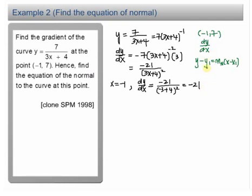Now we have to find the equation of normal. We already have (-1, 7), the x1, y1. Now we proceed to find the gradient for normal. Gradient for tangent at this point is actually your dy/dx, which is negative 21. And we know that gradient for normal equals negative 1 over gradient for tangent. That is negative 1 over negative 21. The answer is 1 over 21.